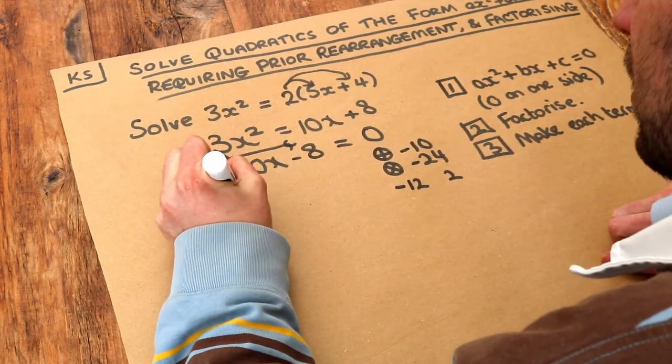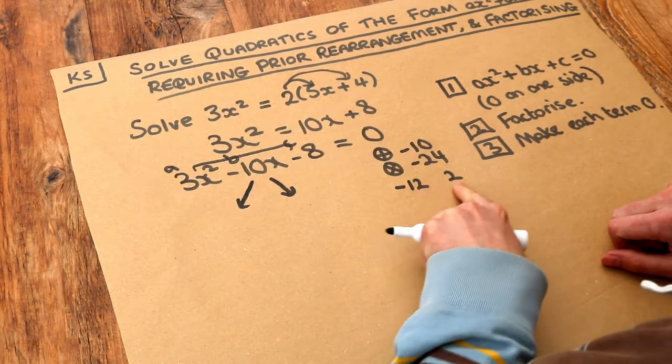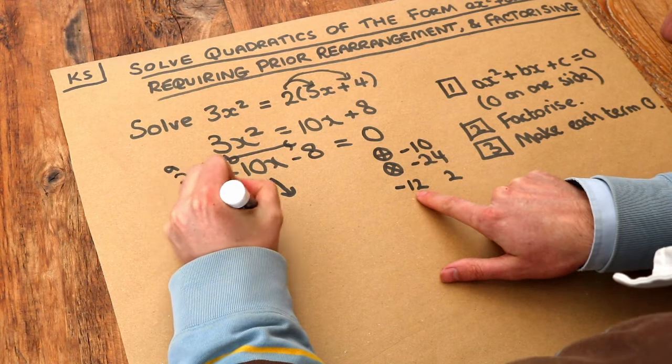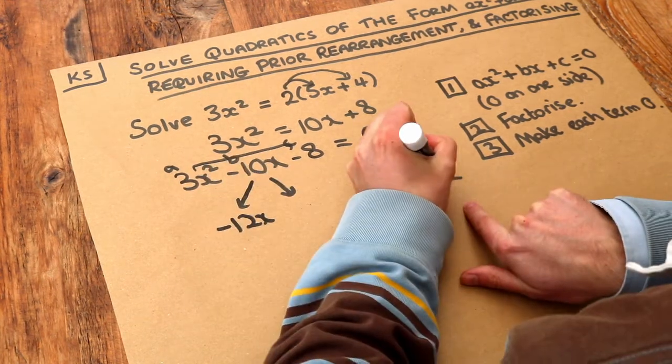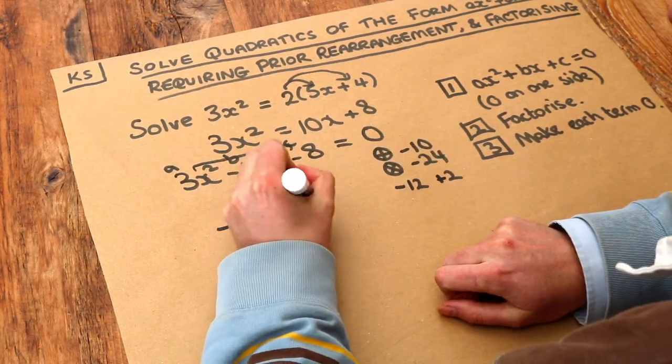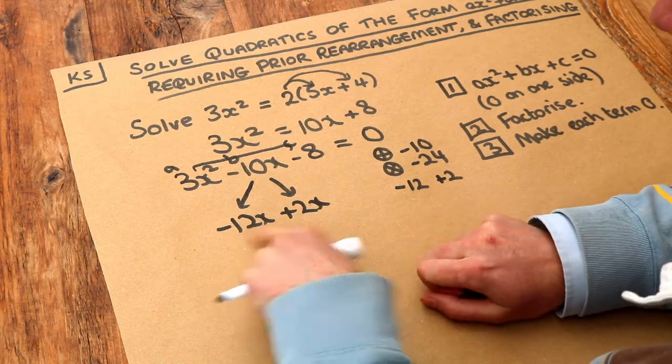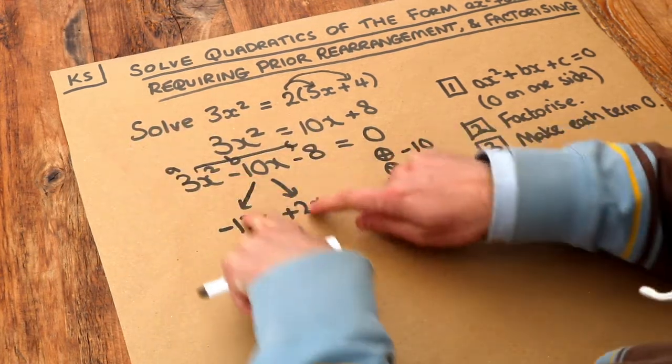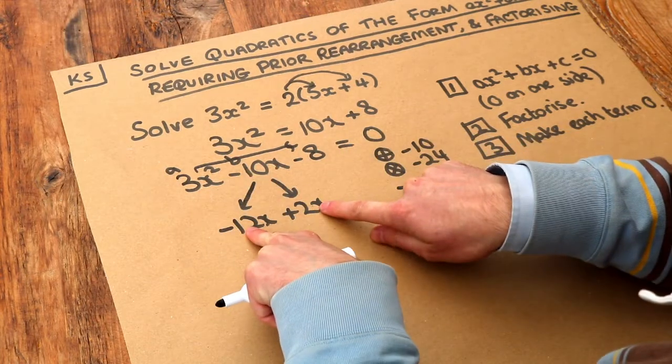So remember, we then split the middle term using those two numbers. So the minus 10x gets split into minus 12x and plus 2x. Yep. We need the x's there because if we just had minus 12 plus 2, that would be minus 10, not minus 10x.